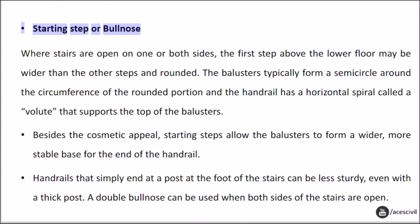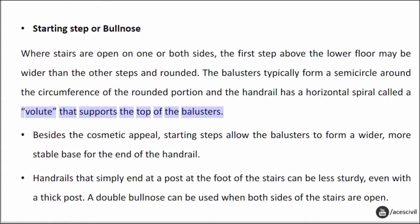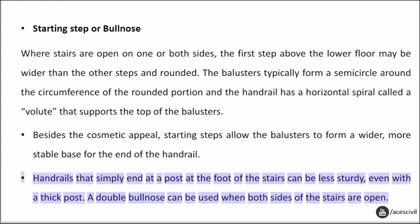Starting Step or Bullnose: where stairs are open on one or both sides, the first step above the lower floor may be wider than the other steps and rounded. The balusters typically form a semicircle around the circumference of the rounded portion and the handrail has a horizontal spiral called a volute that supports the top of the balusters. Besides the cosmetic appeal, starting steps allow the balusters to form a wider, more stable base for the end of the handrail. Handrails that simply end at a post at the foot of the stairs can be less sturdy, even with a thick post. A double bullnose can be used when both sides of the stairs are open.